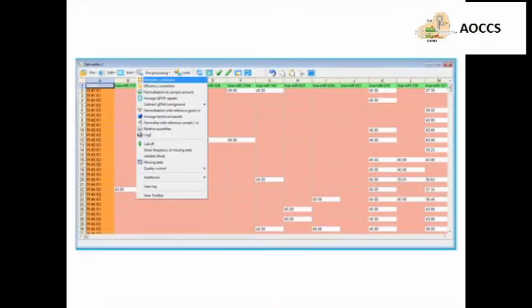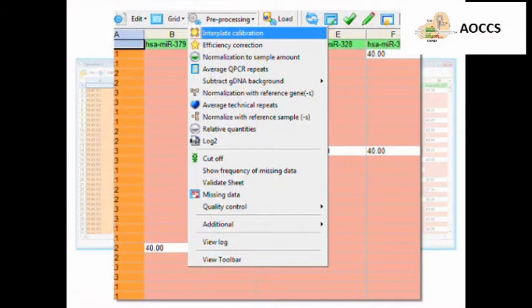First, calibrate the data between the plates by choosing Interplate Calibration from the Preprocessing menu to ensure all of the plates are calculated using the same parameters.